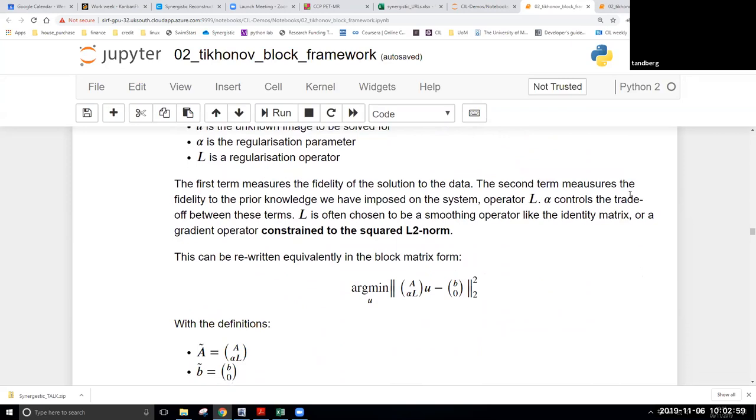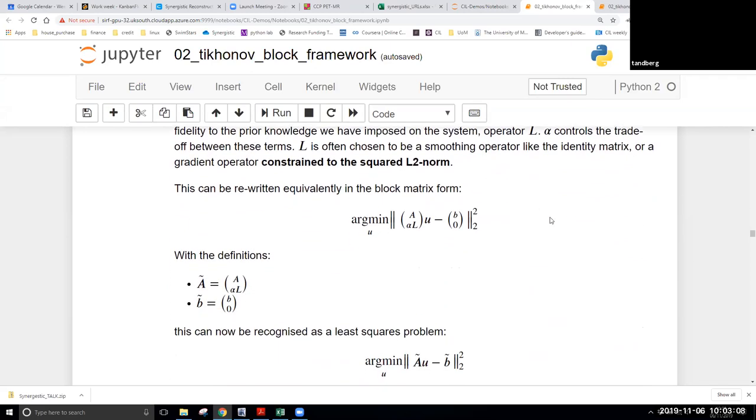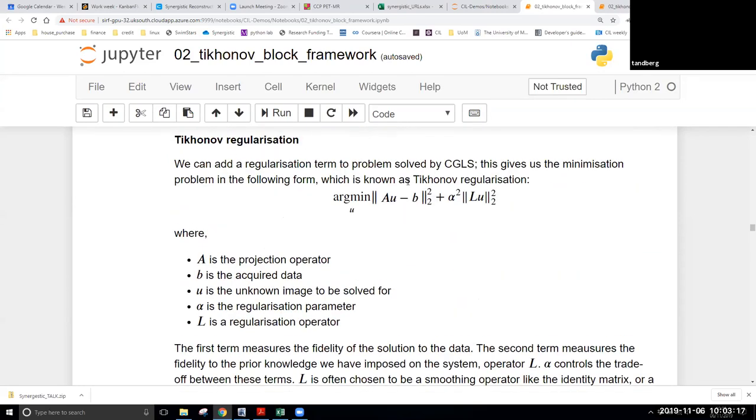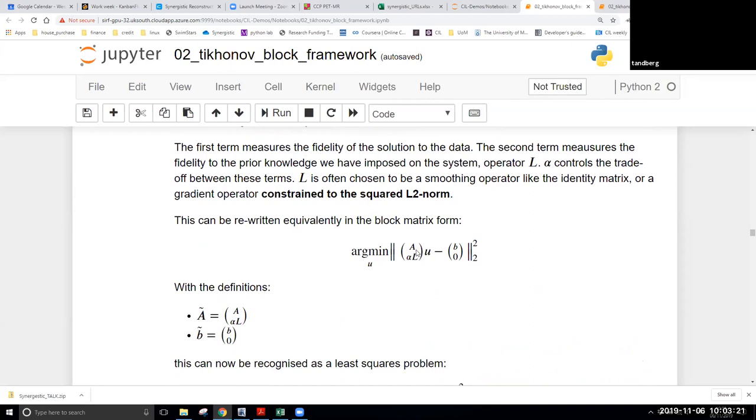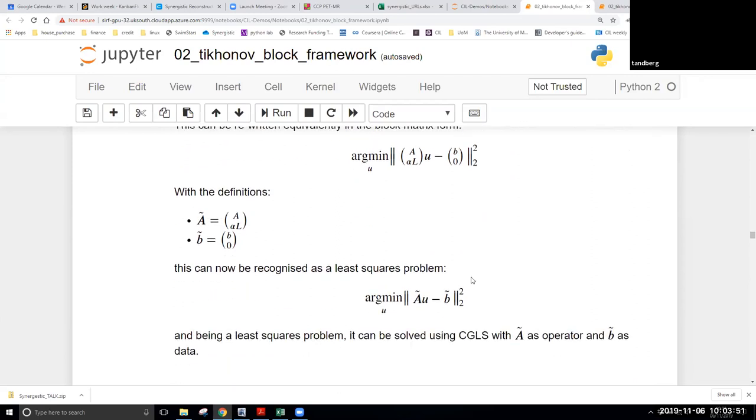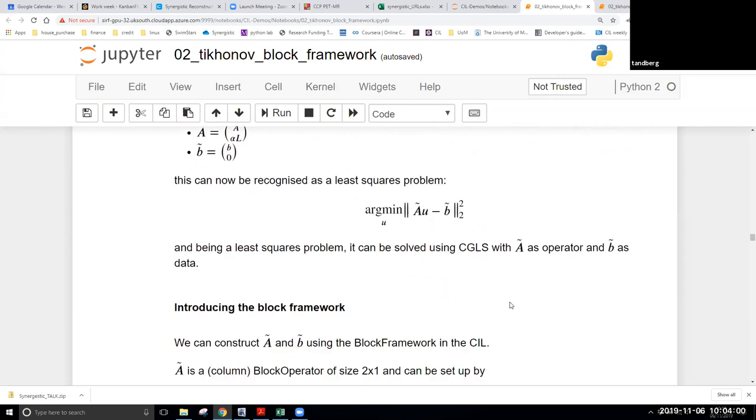In the CIL, we have what we could call the block framework, which is essentially a way to write block matrices and concatenate vectors or concatenate data containers. So, it turns out you can take your Tikhonov problem here and you can rewrite it in this way, where we have stacked the A matrix and the alpha times the L operator we've picked. The same image is here and then we have this new concatenated data vector. And by doing it that way, we've now recovered a least squares problem in A tilde and B tilde, meaning that, that's what CGLS solves for us. So, if we can construct that, we can formulate our least squares problem like that, and then we can feed that into CGLS.